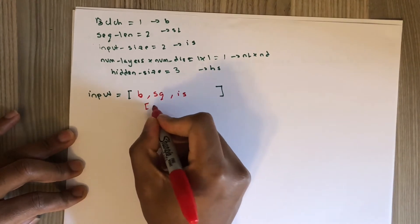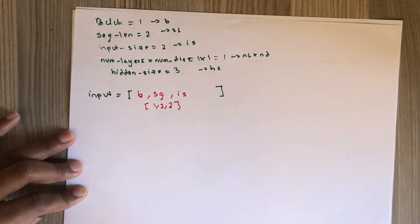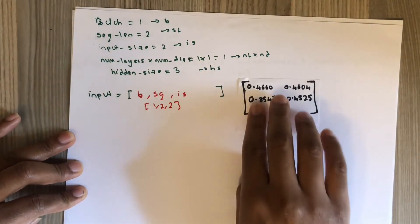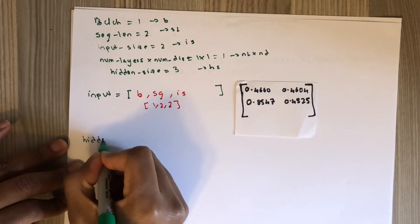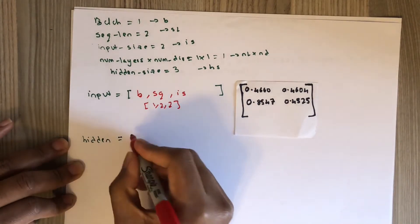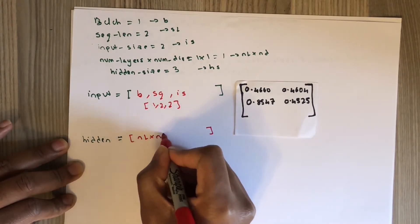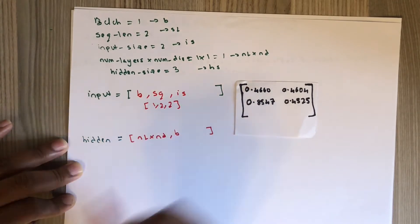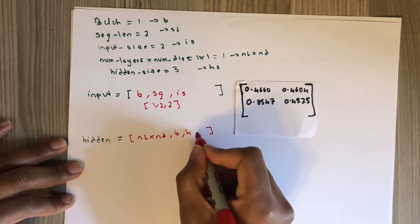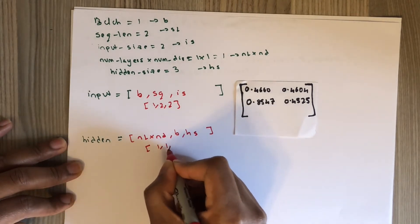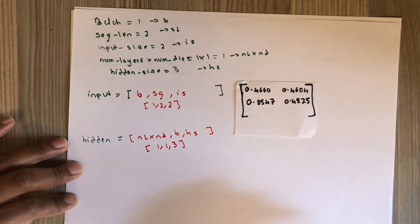In this case, the input is one by two by two, and as an example we can have something like this. For the hidden, it has a dimension of NL times ND, then the batch size, then the hidden size. In this case it is one by one by three, and as an example we can have something like this.